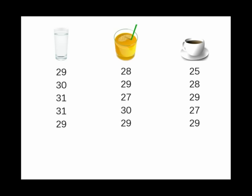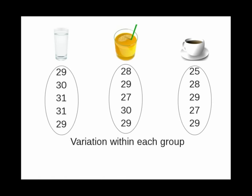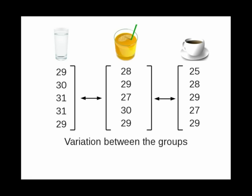When you do the experiment, the scores won't all be the same. The total variation of all the scores is made up of two parts. The variation within each group, because the people in each group have different reaction times. And the variation between the groups, because the drinks you gave each group are different.